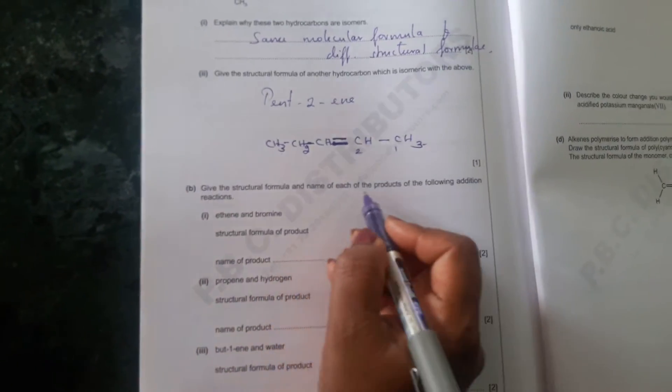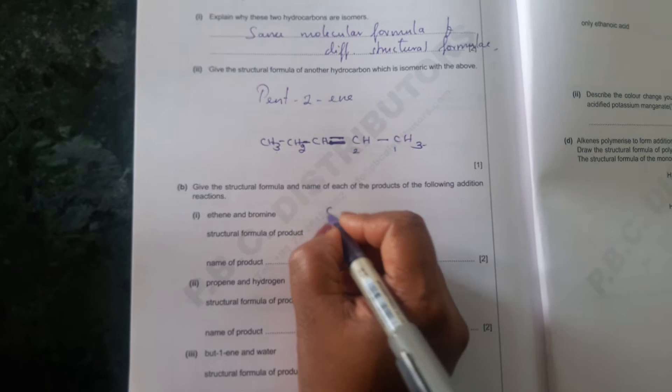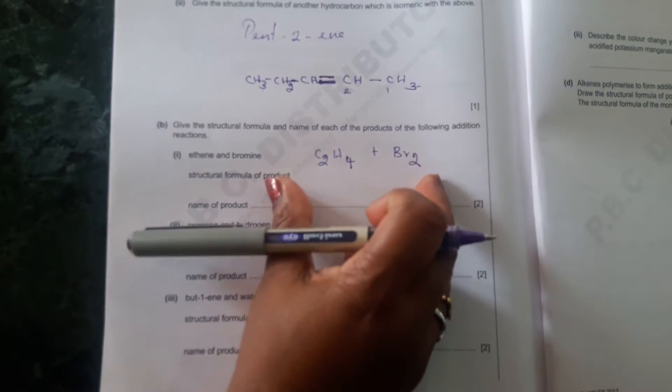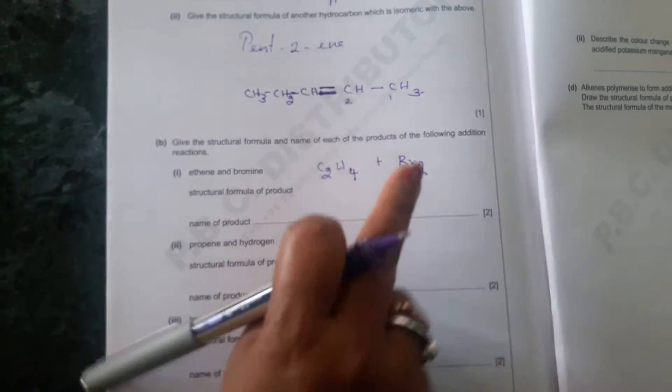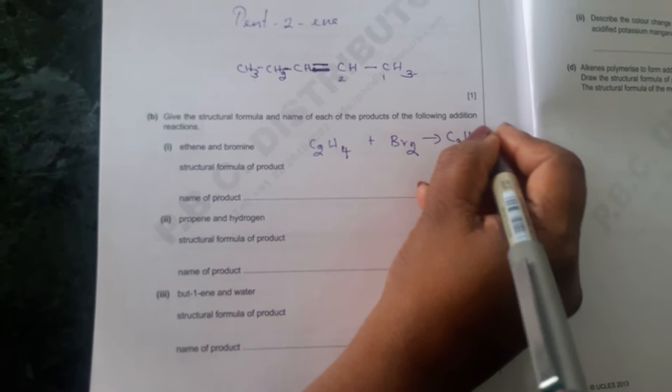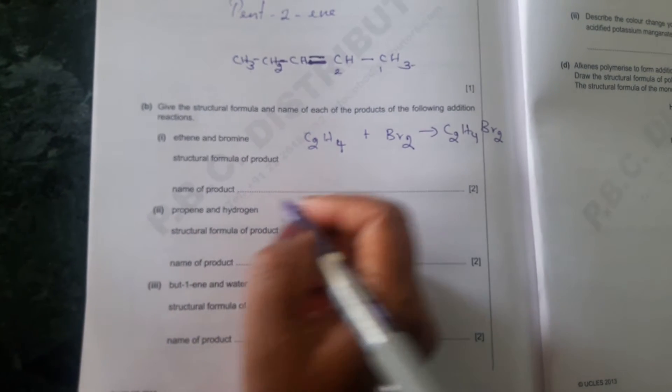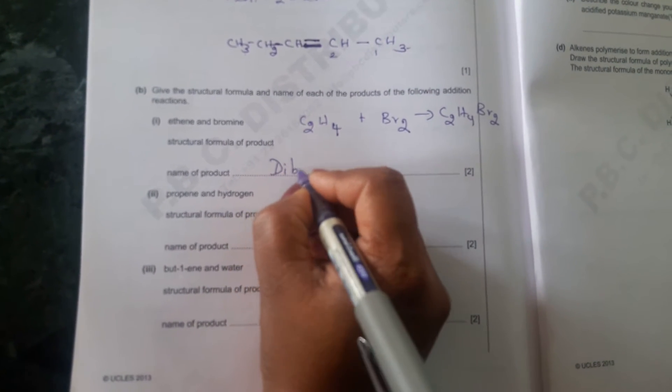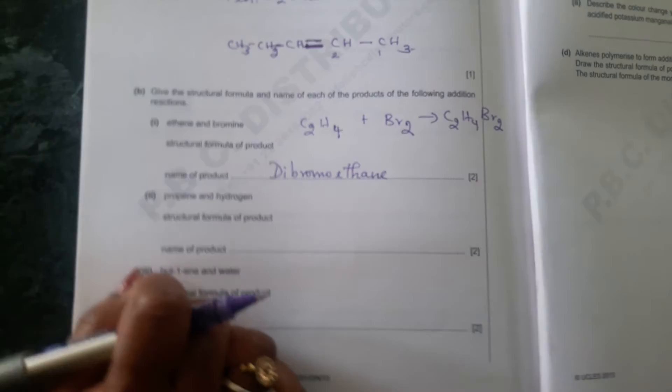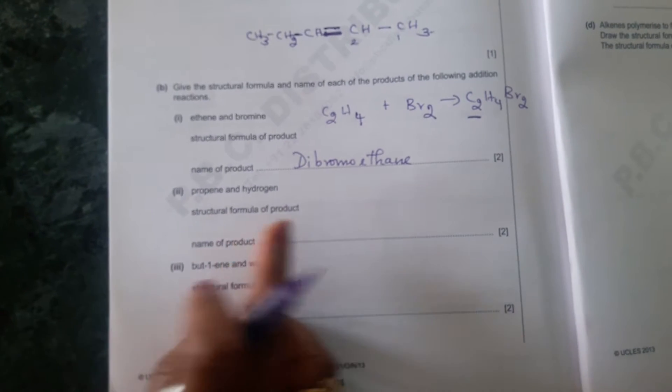Give the structural formulae name of each of the products of the following addition reaction. So ethene plus bromine. You need to know ethene is C2H4 plus bromine Br2. So in this case, Br2 will react with this and form C2H4Br2. So this becomes dibromoethane. So name of the product is dibromoethane. So two bromine and ethane.